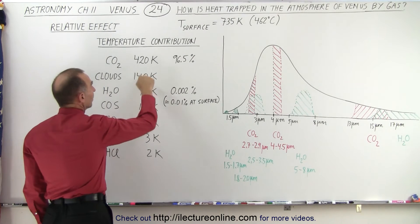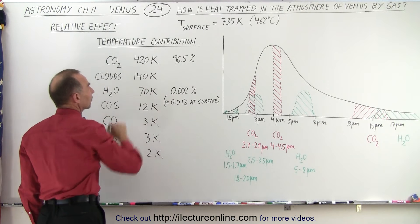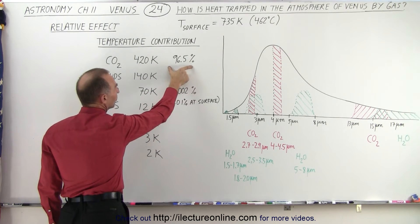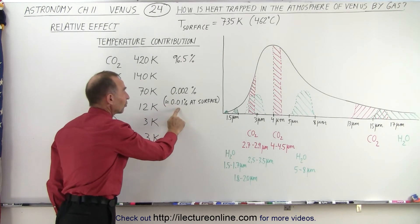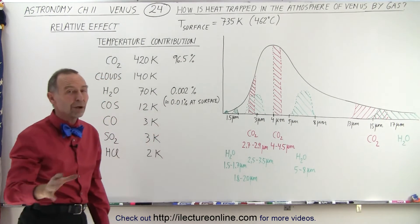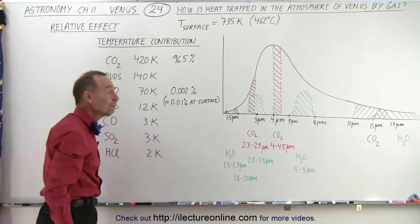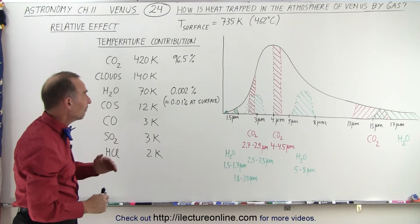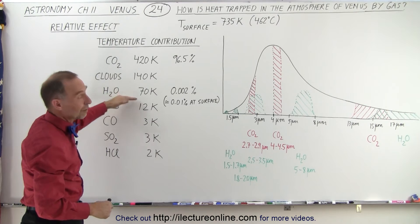Now, imagine, the amount of effect of water vapor is one-sixth the effect of carbon dioxide, even though there's so much more carbon dioxide in the atmosphere, 96.5% carbon dioxide, versus at the surface, about 0.01% of water vapor at the surface, and on average throughout the atmosphere, only 0.002%. It's quite amazing, even though it has so little water vapor, it still has a significant effect on the temperature.